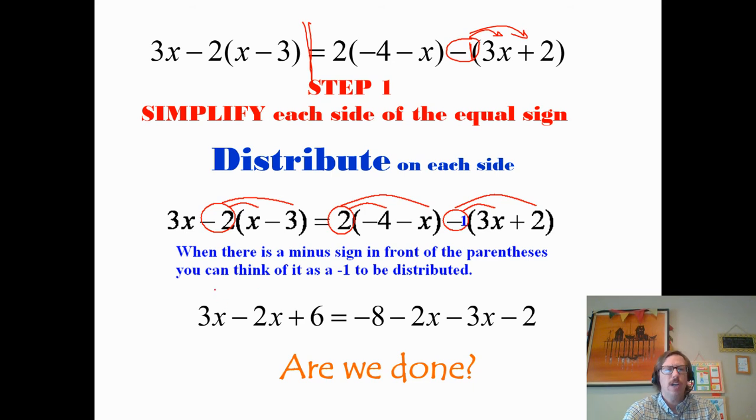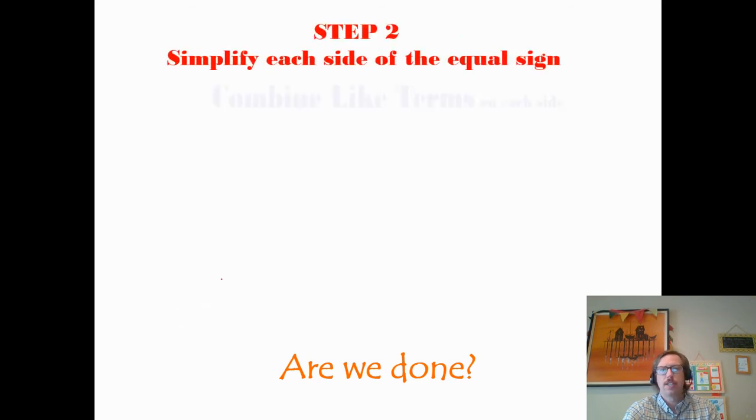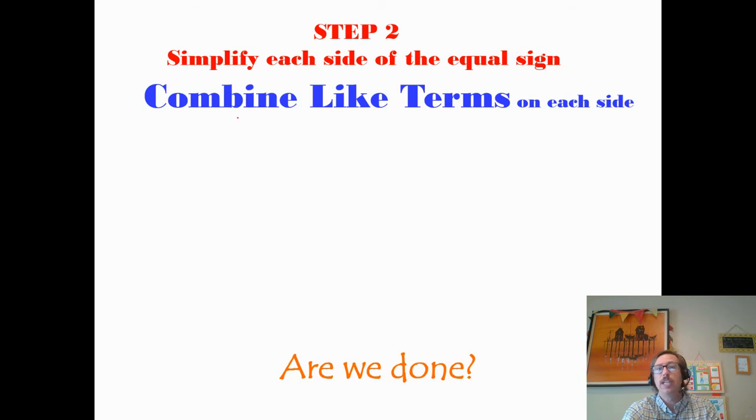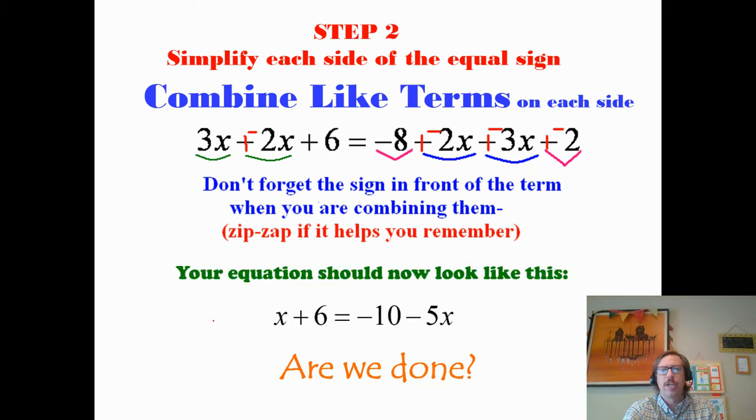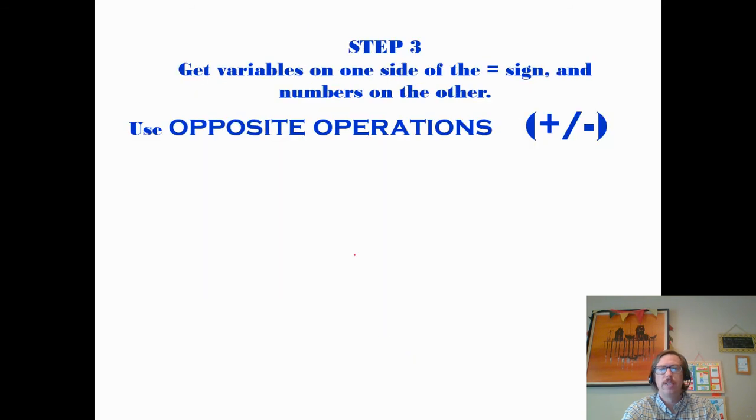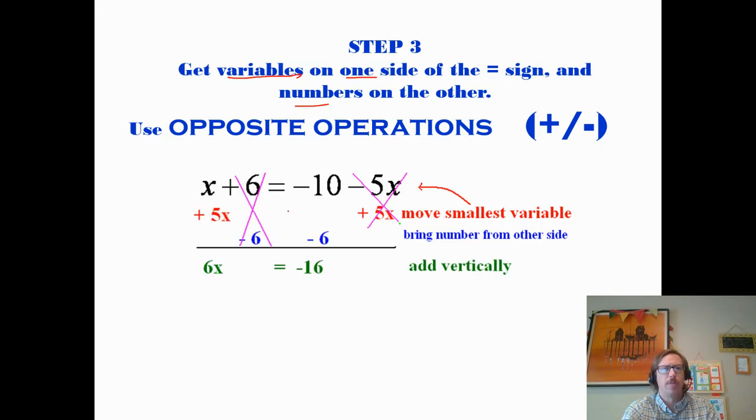So to do that, we will distribute on each side. I would take the negative 2 and multiply by each term. And remember to change this one. This is our big fatal flaw. A minus sign here means it's a negative 1 that is being distributed to each of these terms. So we get here and we're like, okay, are we done? Well, not quite. The next step is to collect like terms. We're still trying to simplify each side without changing anything.